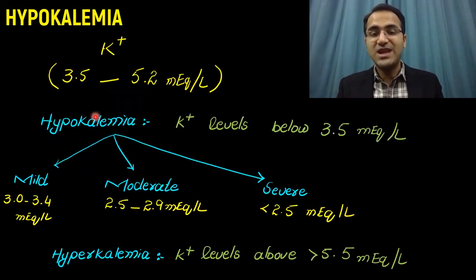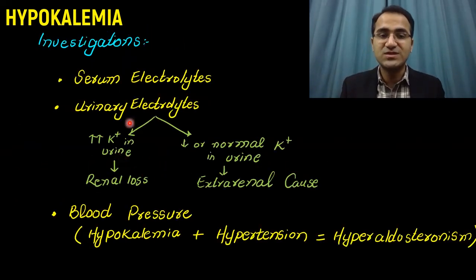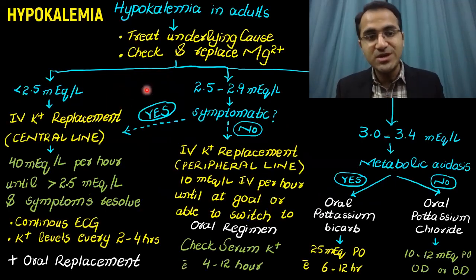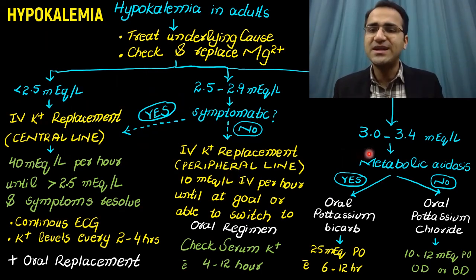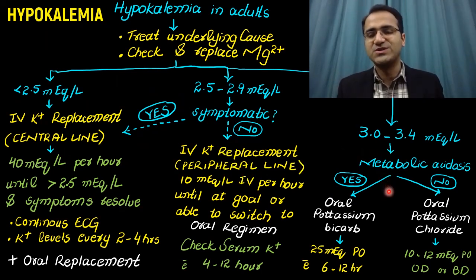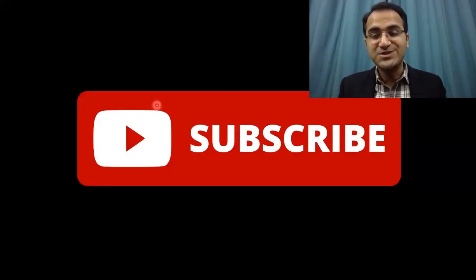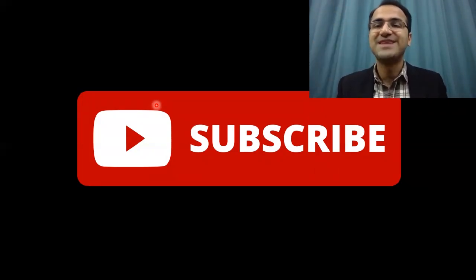In summary, we discussed potassium levels, the definition and causes of hypokalemia, signs and symptoms, and investigations including urinary electrolytes. Treatment involves reviewing underlying causes and correcting magnesium. In severe hypokalemia, use a central line at a fast rate. In moderate hypokalemia, use a peripheral IV line at a slow rate. In mild hypokalemia, give oral potassium replacement. High-potassium diets are also recommended.